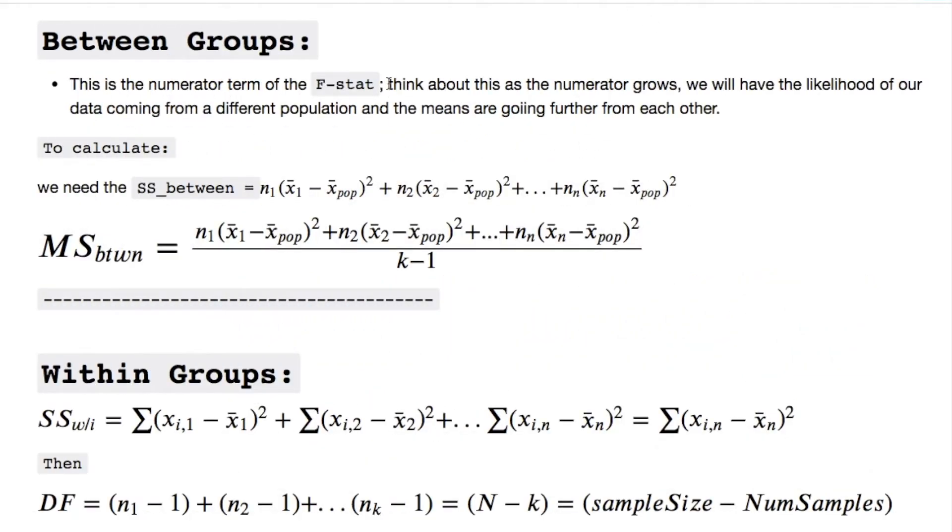First the betweens. That's the numerator. Let's think about this. As the numerator grows, we will have the likelihood of our data coming from a different population. Meaning that your overall statistic will become greater than one because it's in the numerator and it's growing. That means that the means are going away from each other. So you're having less of that overlap and they're kind of pushing each other away. Here's what it looks like for the sum of squares between. Normally we don't calculate this by hand unless you're in an introductory course or your professor just wants you to drill this through your head. But this is how you set it up.